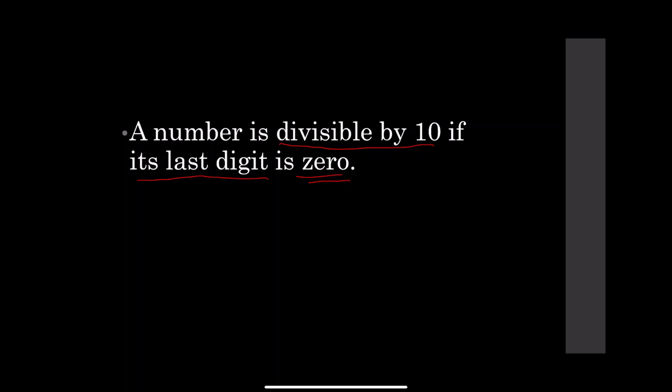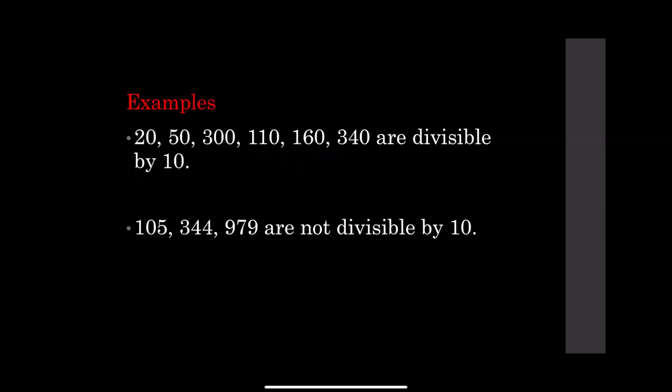Examples: Numbers 20, 50, 300, 110, 160, 340 are divisible by 10. Look at the numbers here. Starting with 20, the ones place value is 0. 50: 0. 300: 0. 110: 0. 160: we have 0 here. And 340: we have 0 here as well. So they are considered to be divisible by 10.